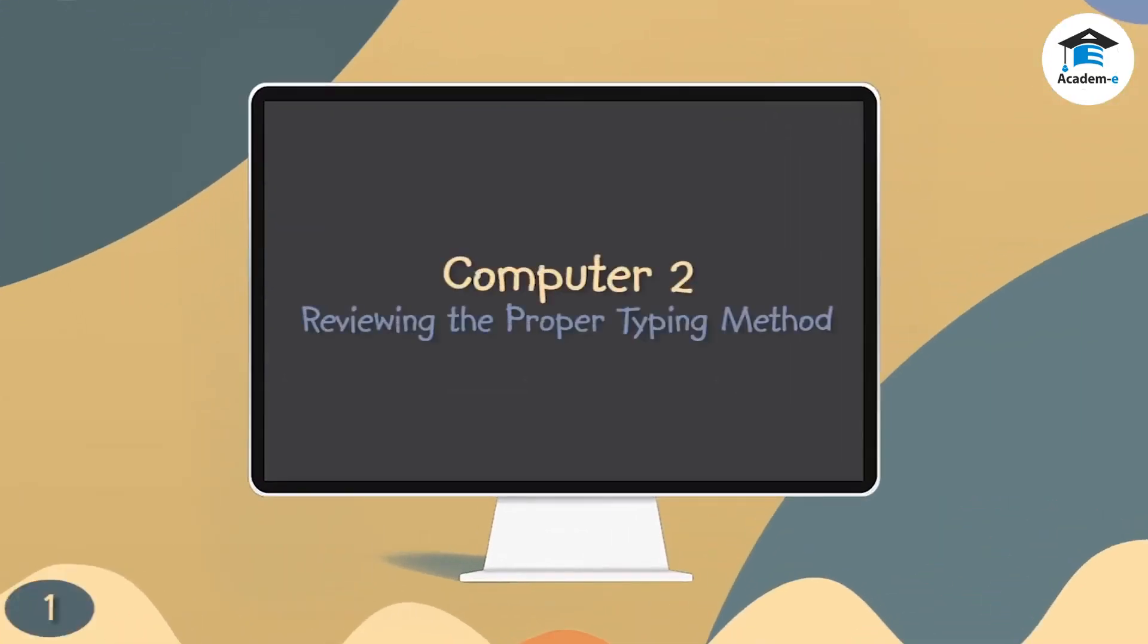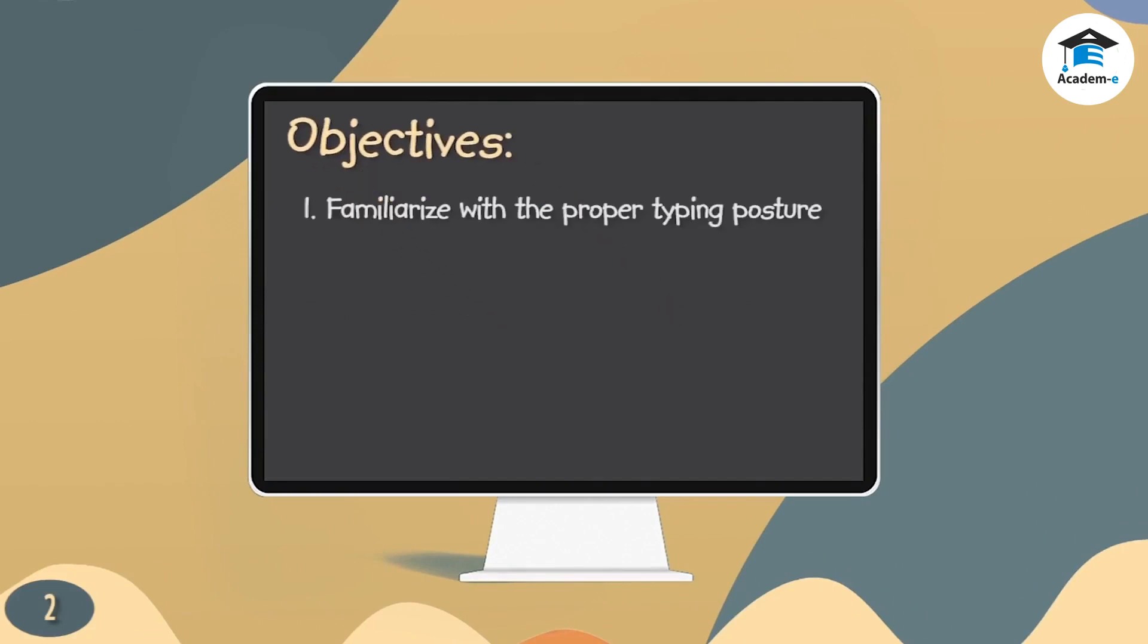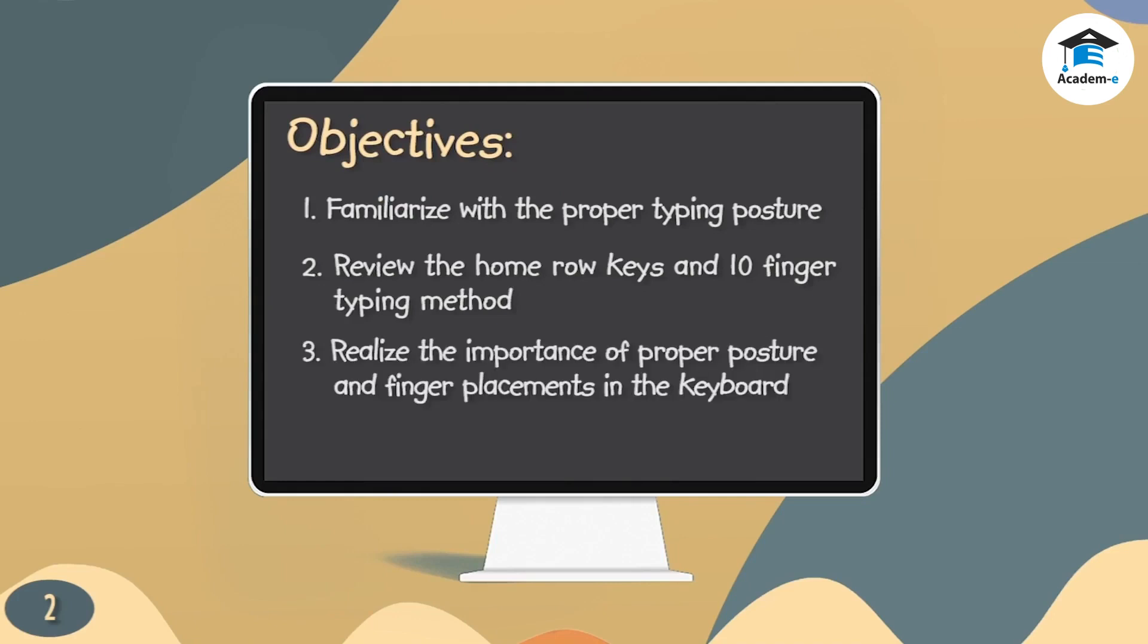Computer 2: Reviewing the proper typing method. Objectives: At the end of the lesson, the students should be able to familiarize with the proper typing posture, review the home row keys and 10 finger typing method, and realize the importance of proper posture and finger placements in the keyboard.